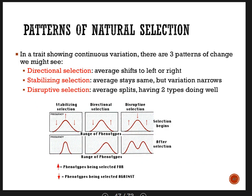Evolution does not lead to perfection. When it comes to natural selection, there are actually three different patterns we can see over time: directional selection, stabilizing selection, and disruptive selection. I'm going to pause this video here — I know this will make four videos total — but there are a lot of slides to cover, so I'll see you on the other side.